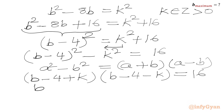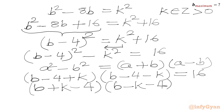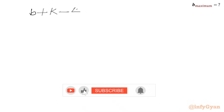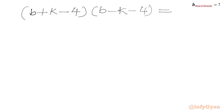Using the difference of squares formula a² − b² = (a + b)(a − b), we factor the left side: (b − 4 + k)(b − 4 − k) = 16, which can be rewritten as (b + k − 4)(b − k − 4) = 16. Since k is a positive integer, the first bracket is greater than or equal to the second bracket.